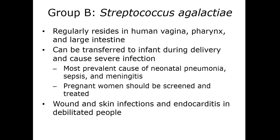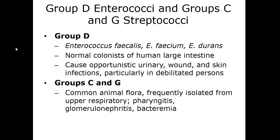Group D streptococci — the enterococci — include Enterococcus faecalis, which is a normal flora of the large intestine. It is resistant to most antimicrobials, can cause endocarditis in humans, and has been known to be a nosocomial or hospital-acquired wound infection. Groups C and G streptococci are common flora for animals and often result in glomerulonephritis, strep throat, and bacteremia.